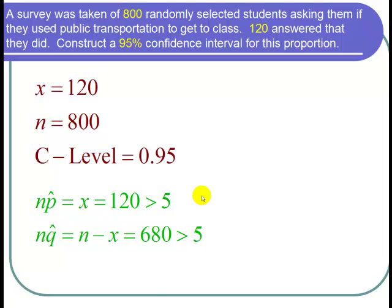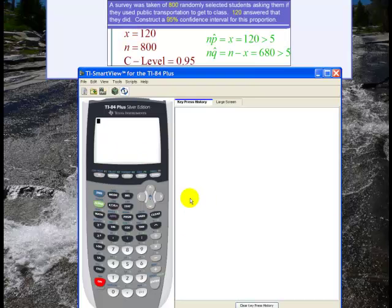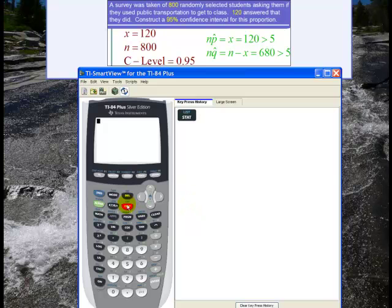So now let's go to the calculator. So here's the calculator to get to the confidence interval calculations. I go to STAT and then I go to TESTS. So use a right arrow twice and then I go down a lot until I get to 1-PropZInt.